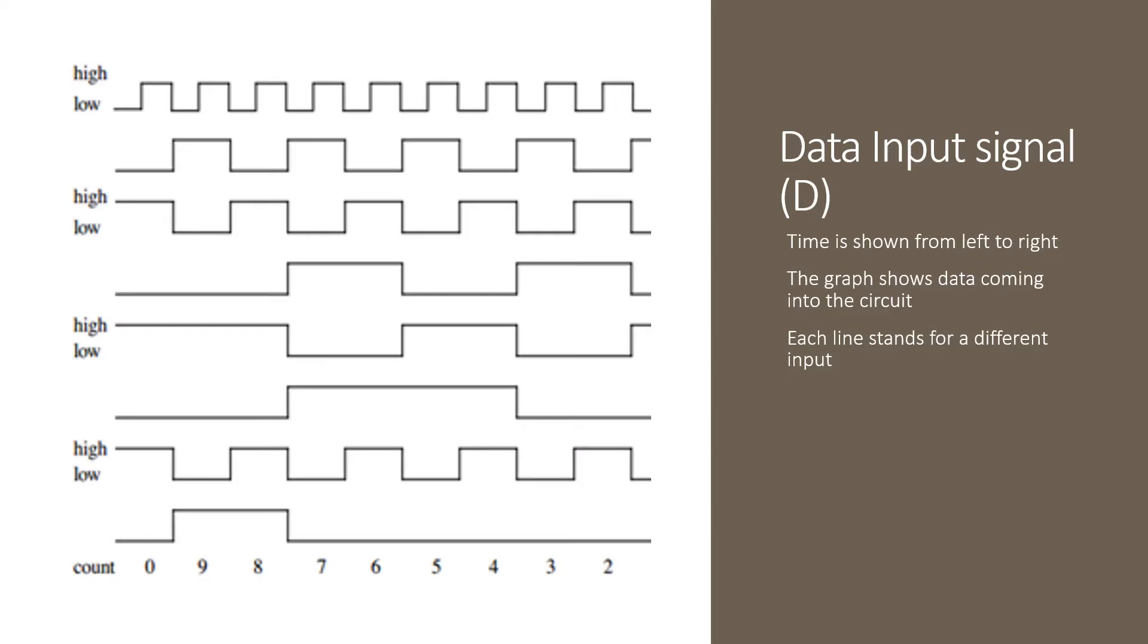On the other hand, the data input is much more chaotic. It's not regular like the clock. It can be up and down at unpredictable times. The computer, for example, doesn't know when the temperature is going to change. So the input from the temperature sensor can come into the computer at any time in the cycle.